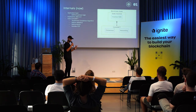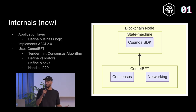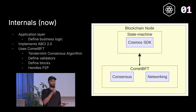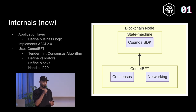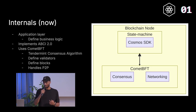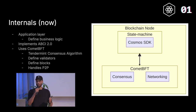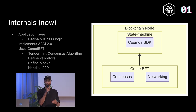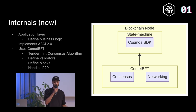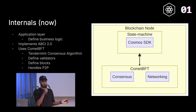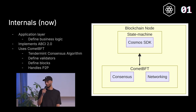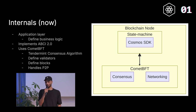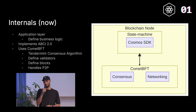Let's dive into the internals and how it works. The Cosmos SDK is basically the application layer of your blockchain — this is where you define your business logic and interact with the consensus layer. It wraps everything in one, implements ABCI 2.0, and uses CometBFT. CometBFT is an implementation of the Tendermint consensus algorithm; it handles the validators, blocks, and peer-to-peer layer. The Cosmos SDK handles the rest: the modules, transactions, and so on.